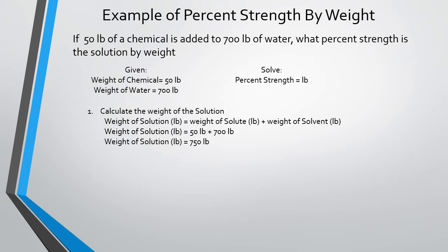Let's take a look at an example. If 50 pounds of a chemical is added to 700 pounds of water, what percent strength is the solution by weight? We are given: weight of the chemical equals 50 pounds, weight of the water is 700 pounds, and we're solving for percent strength. First, calculate the weight of the solution: 50 pounds plus 700 pounds equals a total weight of 750 pounds.